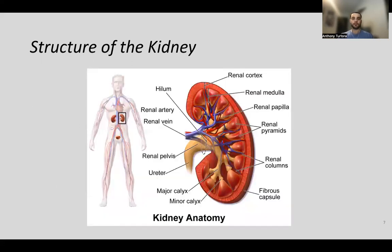The structure of the kidney: we have the outer region, which is the cortex, and the inner region, which is the medulla. We also have renal pyramids, which are essentially the collecting ducts of the nephrons. The nephron is the functional unit of the kidney, and we have over a million in each human kidney. When urine leaves the nephron, it hits the renal papilla, then the renal calyx, then converges at the renal pelvis, travels down the ureter, and into the bladder.